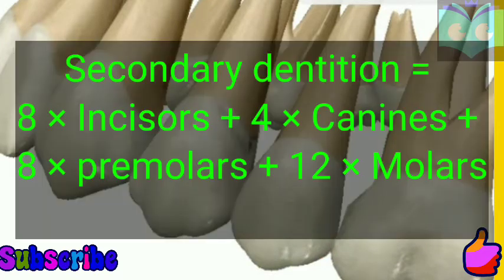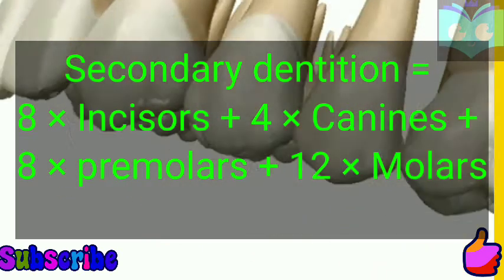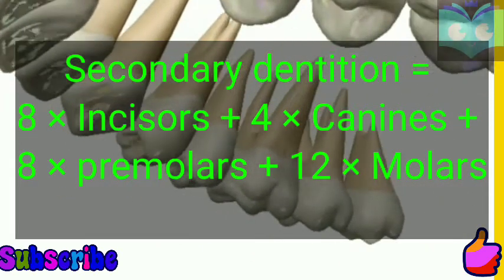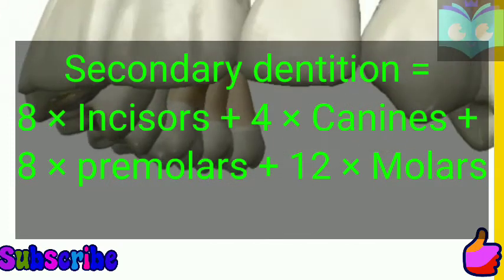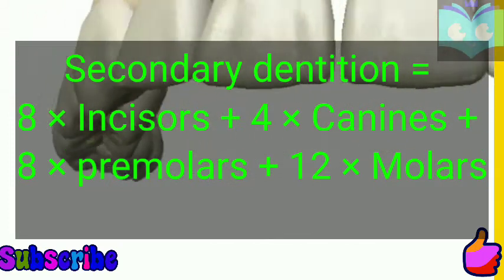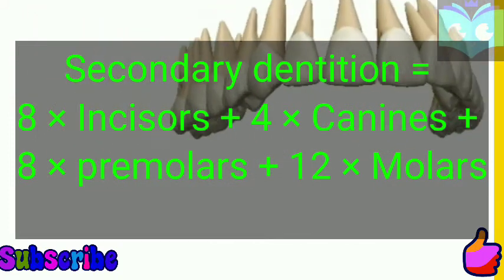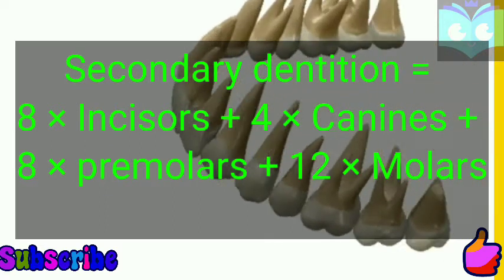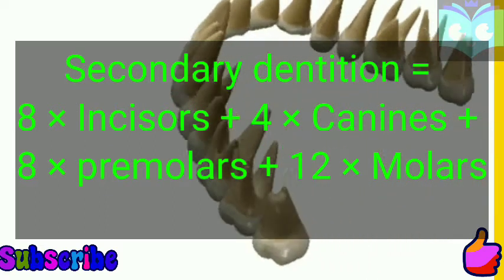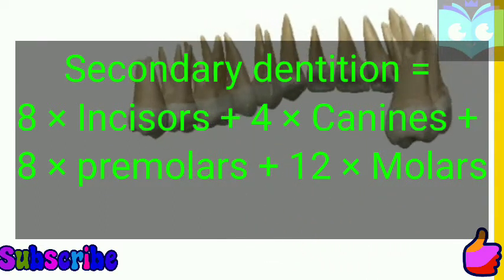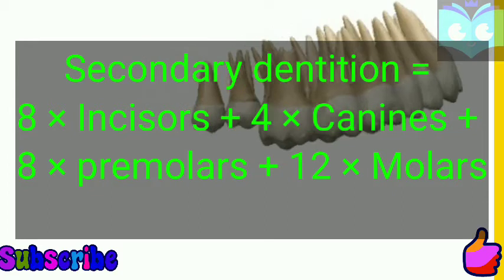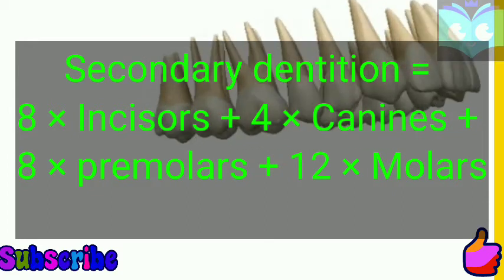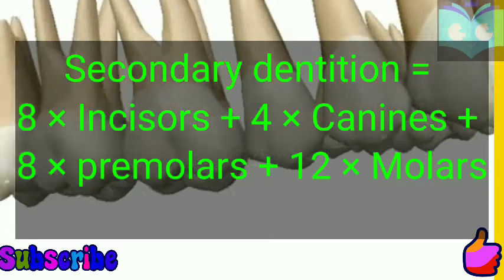Secondary dentition, also known as permanent teeth or adult teeth, includes 32 teeth in adults: eight incisors, four canines, eight premolars, and 12 molars, which together form two sets of 16 teeth, for a total of 32 teeth.